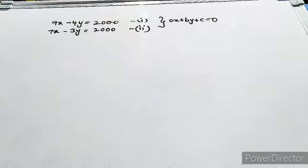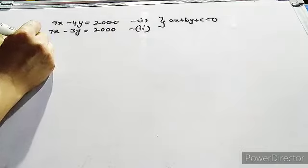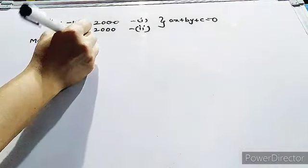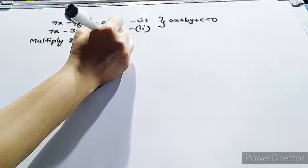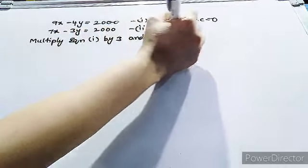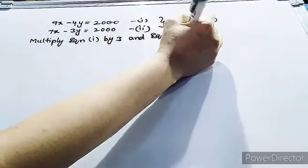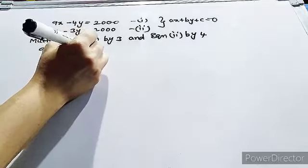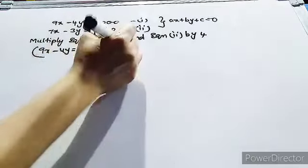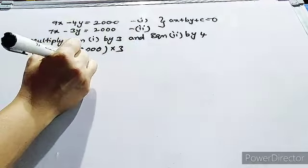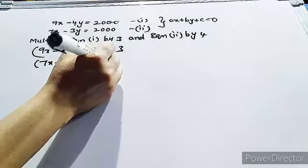So what are we doing? We are making y the same by multiplying equation 1 by 3 and equation 2 by 4. So multiply equation 1 by 3 and equation 2 by 4. 9x minus 4y equals 2000 into 3. 7x minus 3y equals 2000 into 4.